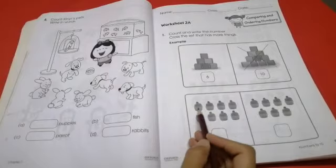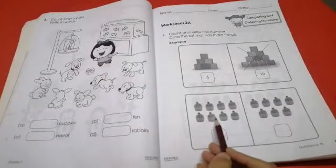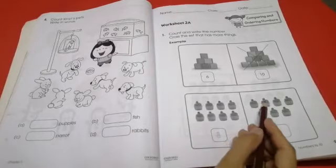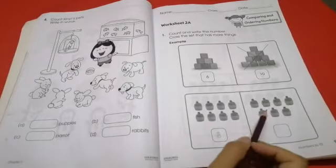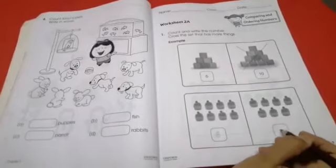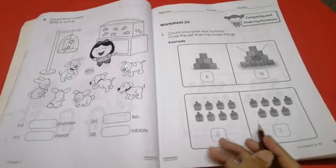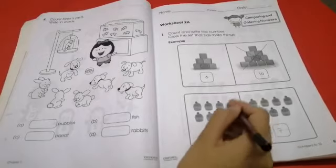Next, we will again count. 1, 2, 3, 4, 5, 6, 7 and 8. We will write 8. Next, 1, 2, 3, 4, 5, 6, 7. We will write 7 here. 8 is greater. We will cross.